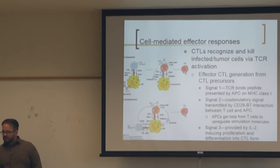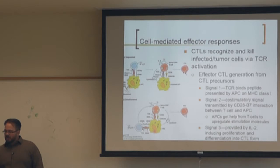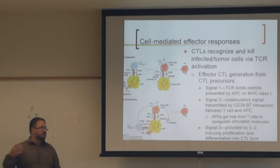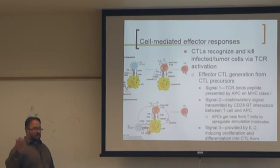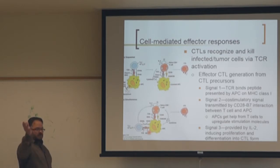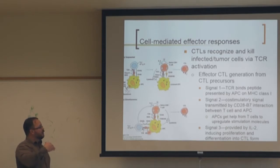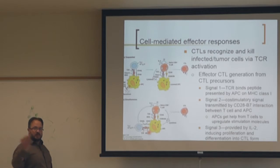Cross-presentation occurs when a dendritic cell expresses antigen via MHC class II, stimulating CD4 helper cells. Those CD4s signal back through the dendritic cell, inducing exogenous antigens to be shuttled through the proteasome into the ER, loaded onto MHC class I, and presented to cytotoxic T cells. Normally only endogenous antigens are presented via MHC class I, but cross-presentation allows exogenous antigens to use this pathway.